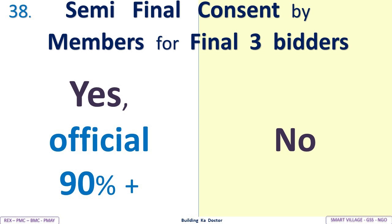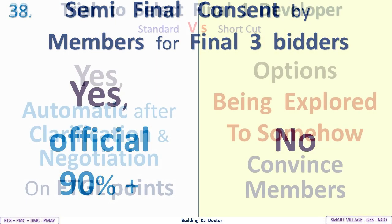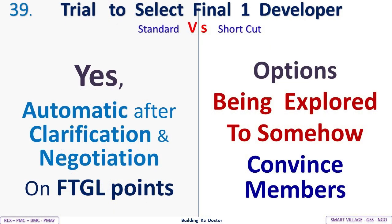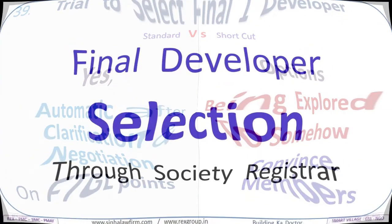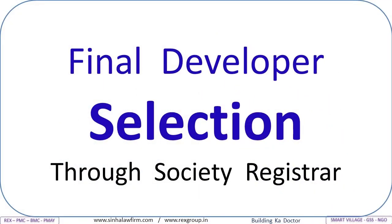Members' bids and consent about process: Standard — automatic; shortcut — no. Semi-final consent by members for final three bidders: Standard — official 90% plus; shortcut — no. Trial to select final one developer: Standard — automatic clarification and negotiation on all FTGL points; shortcut — options being explored to somehow convince members. Final developer selection goes through the society registrar.